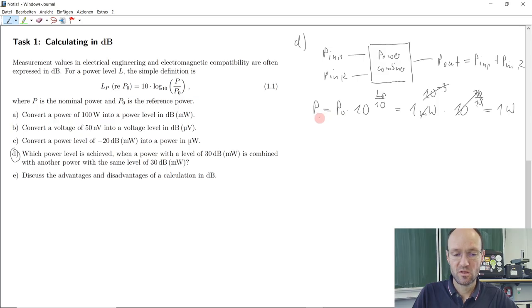And this would be our first power. If the second power has the same power level, then of course we will end up with the very same power there. And so now we could take these two powers and insert them in this equation over here. So our output power is P1 plus P2 and then the result is 2, 2 watts. Okay, so but we don't want to know the power, we want to know the power level at the output. So what do we do?